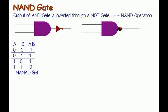NAND gate actually means NOT AND gate, which means the output of this gate is just the reverse of that of a similar AND gate. We know that the output of the AND gate is only high or 1 when all the inputs are high or 1. In all other cases, the output of the AND gate is low or 0. In the case of NAND, the case is just opposite.